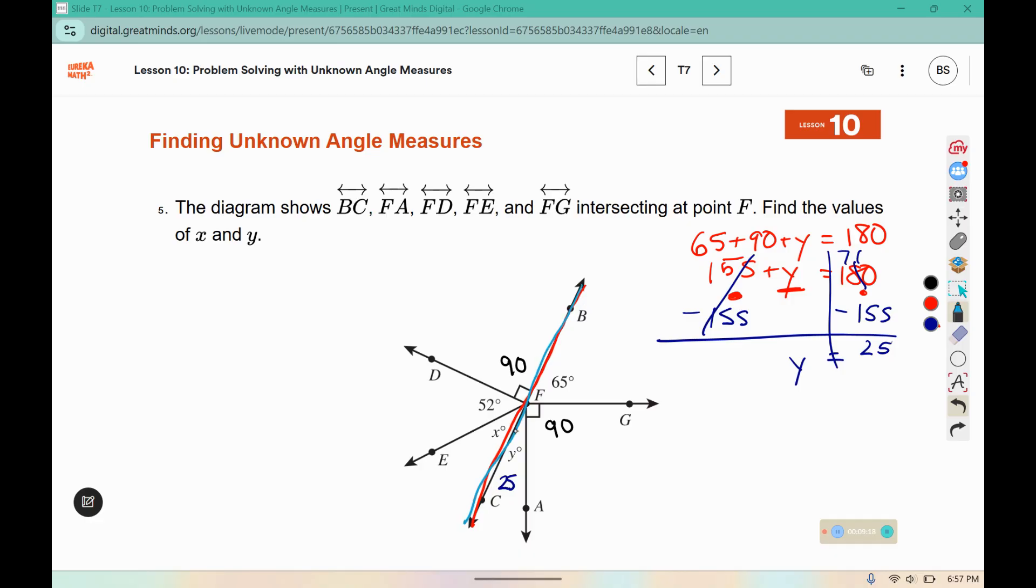I also have a straight angle on this side, which adds up to 180. 52 plus 90 is 142. I can move the 142 over with the other numbers by subtracting. 10 minus 2 is 8, 7 minus 4 is 3. So x equals 38 degrees.